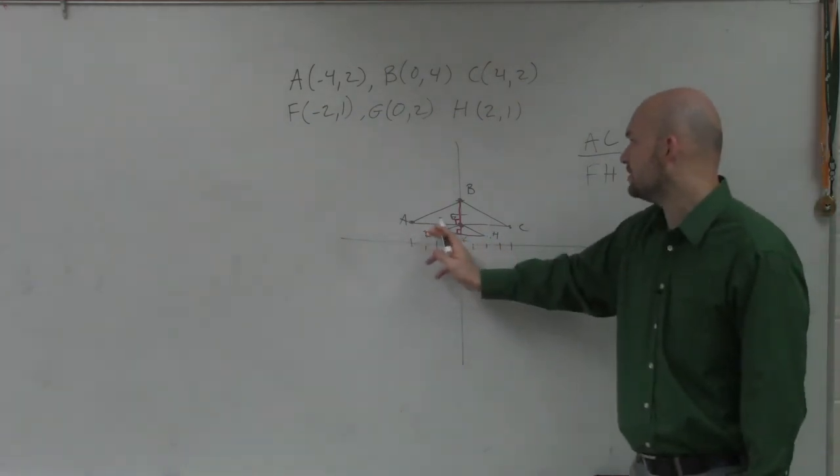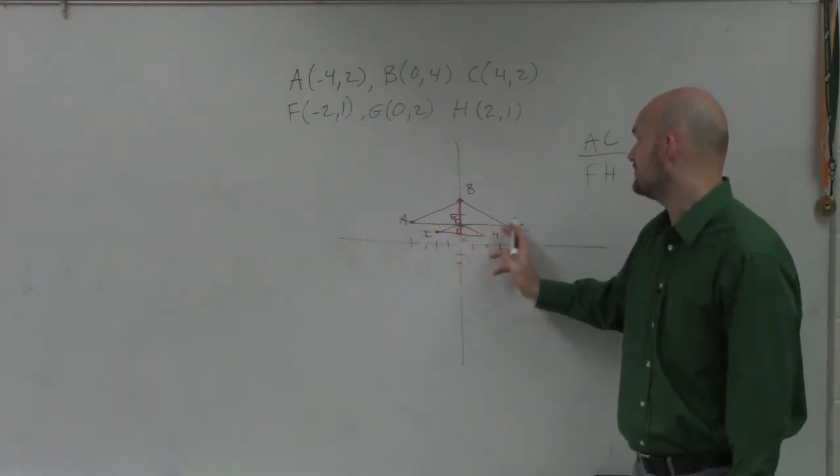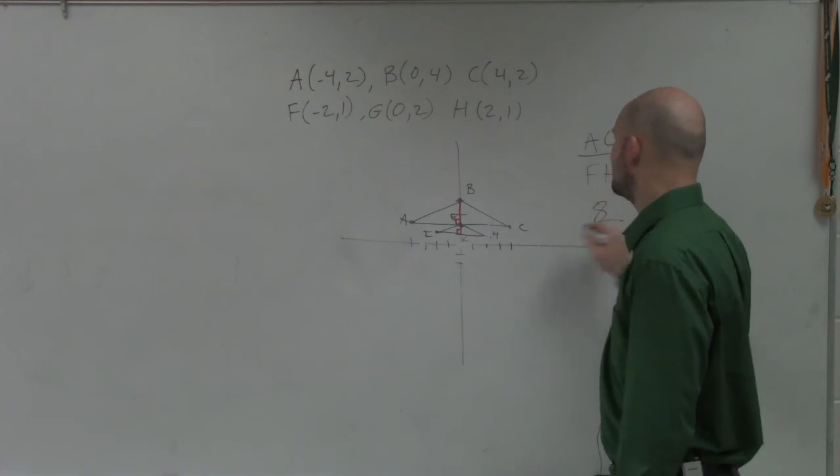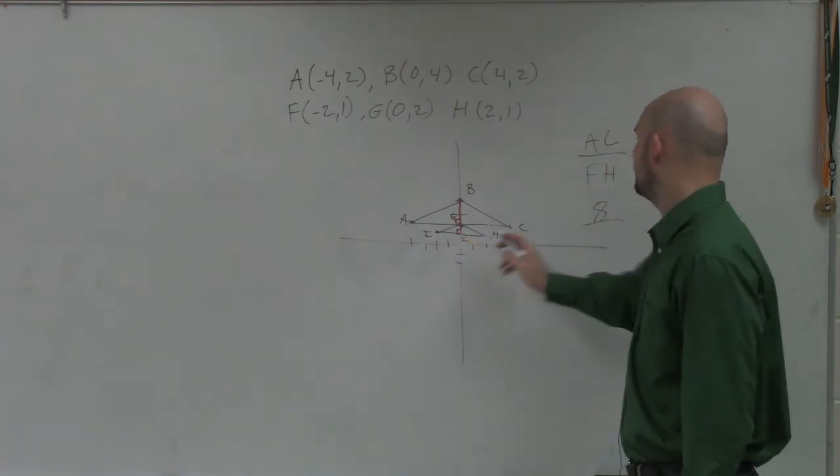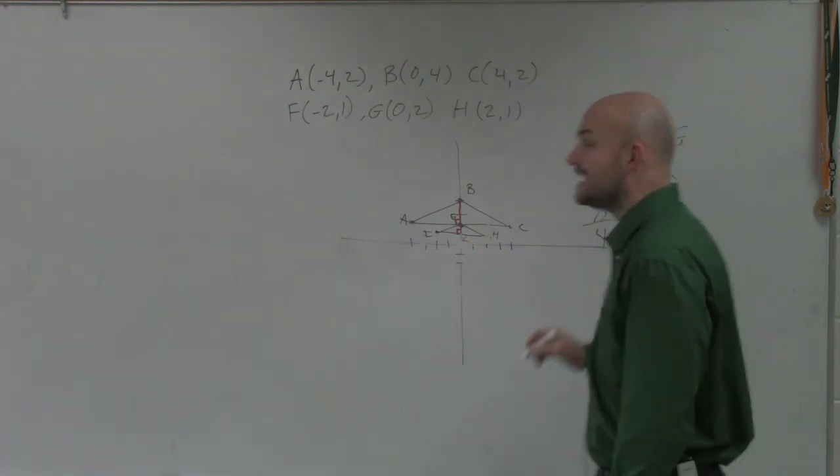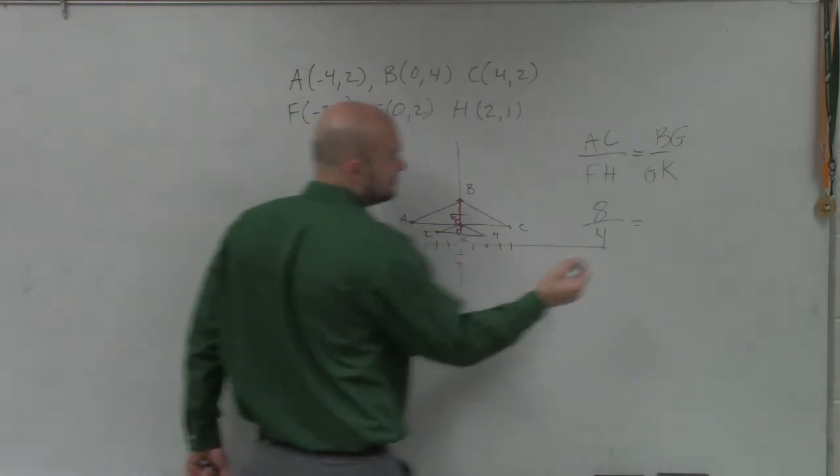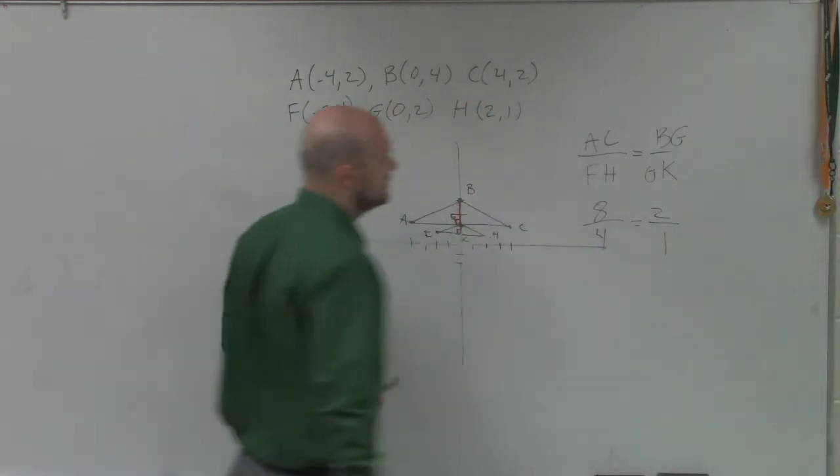So again, we said this was 1, 2, 3, 4, 5, 6, 7, 8. So we have 8 is to 1, 2, 3, 4. As the altitude, which is 2, is to 1.